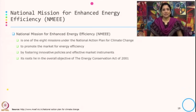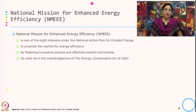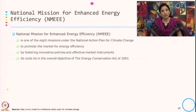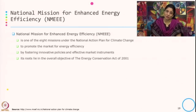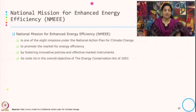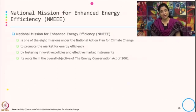Now let us look at the market based instruments existing in India. In 2011, the National Action Plan for Climate Change was started, and they launched eight missions under it. The National Mission for Enhanced Energy Efficiency (NMEEE) is one of these eight missions, which came under the National Action Plan for Climate Change. This mission aims to promote the market for energy efficiency by fostering innovation policies and effective market instruments, and its root lies in the overall objective of the Energy Conservation Act 2001.